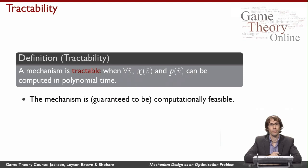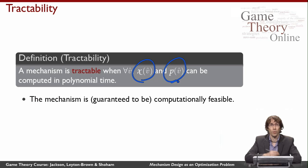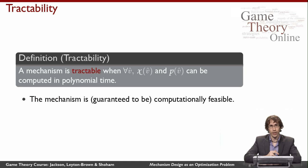One last condition: tractability. So far we've talked about economic conditions on the choice made or payments imposed. Here I want to say that the x-function that chooses the choice and the p-function that chooses the payments are each computable in polynomial time. Some mechanisms we care about don't have this property — figuring out what choice to make and how much to charge everybody can be a hard computational problem. For large inputs we might simply not be able to run the mechanism on any reasonable computational device.